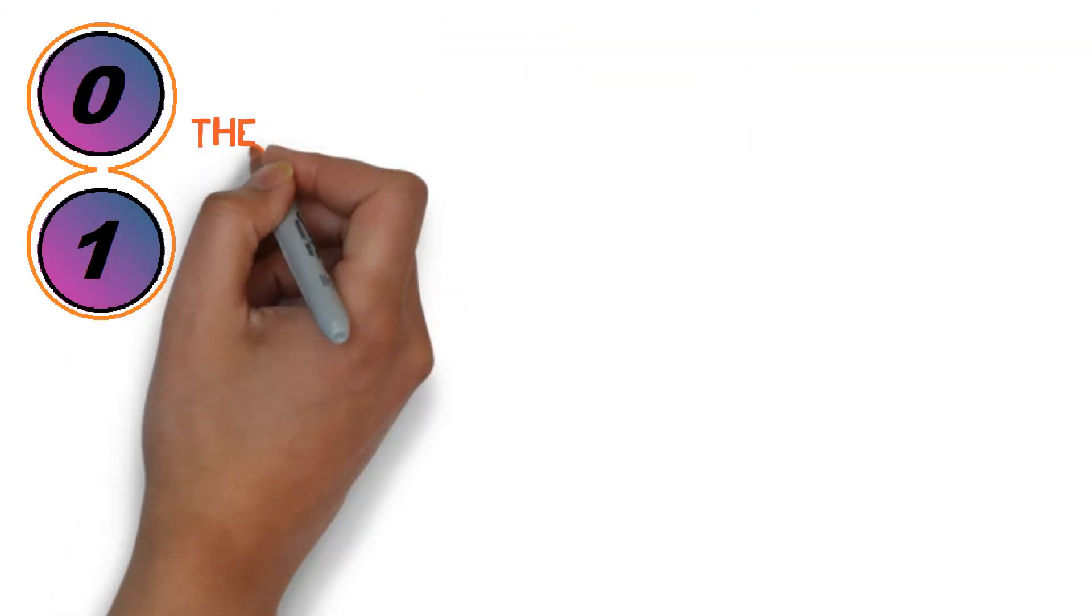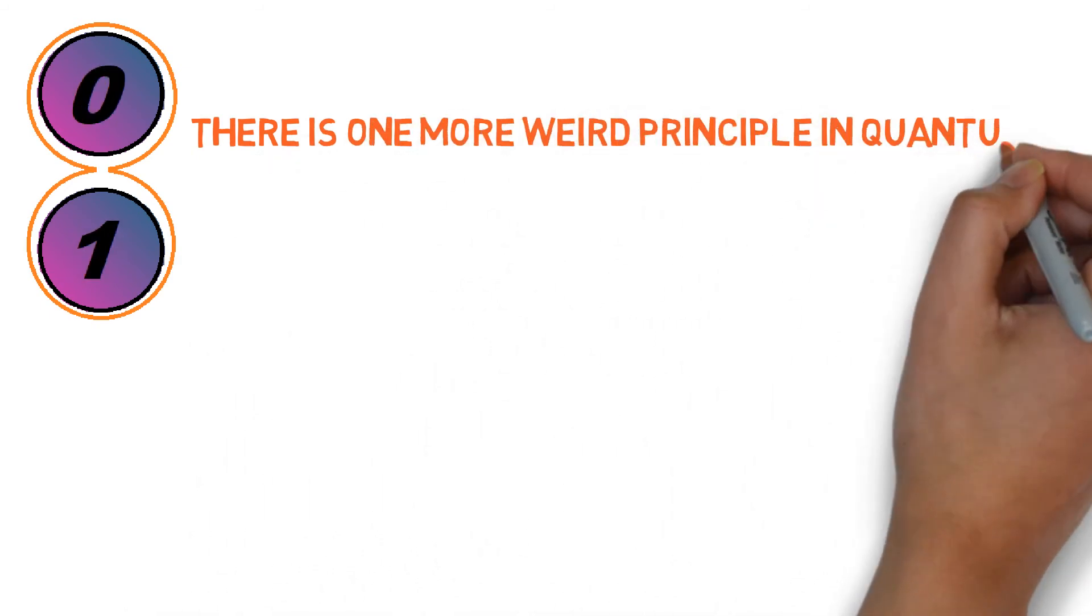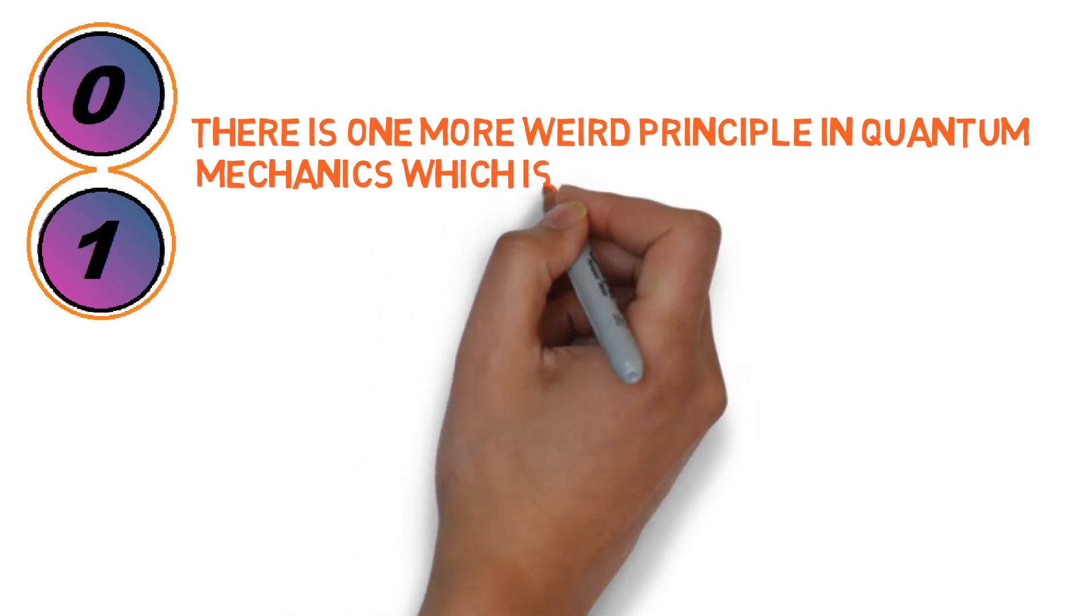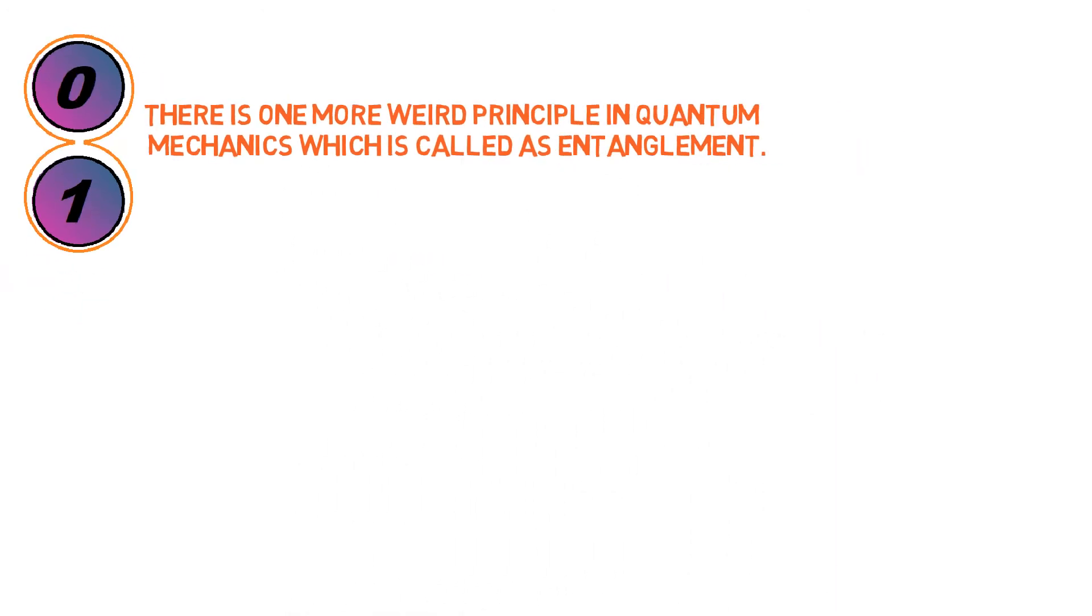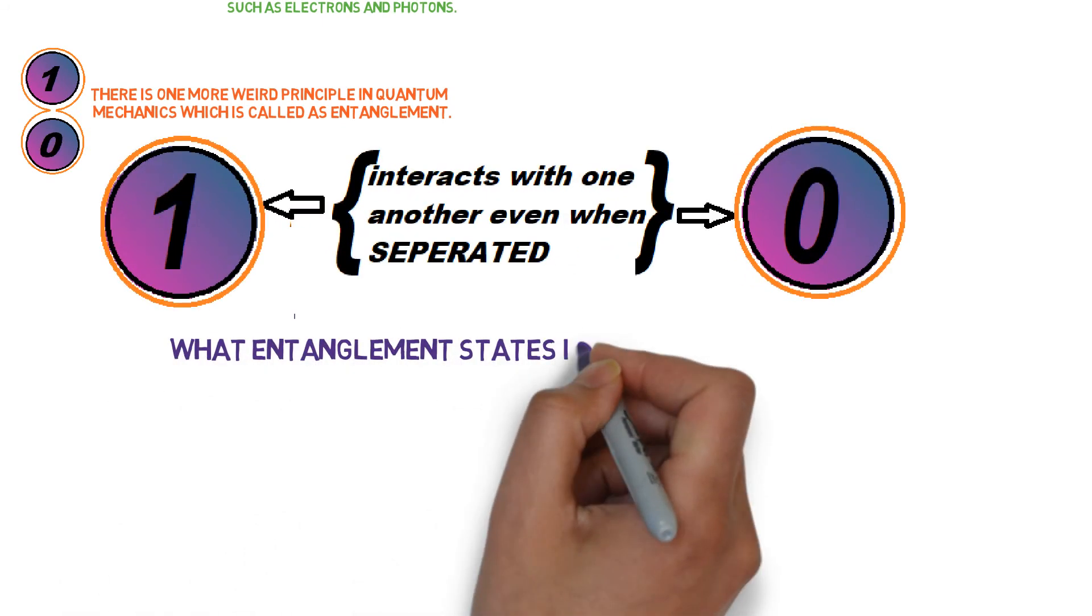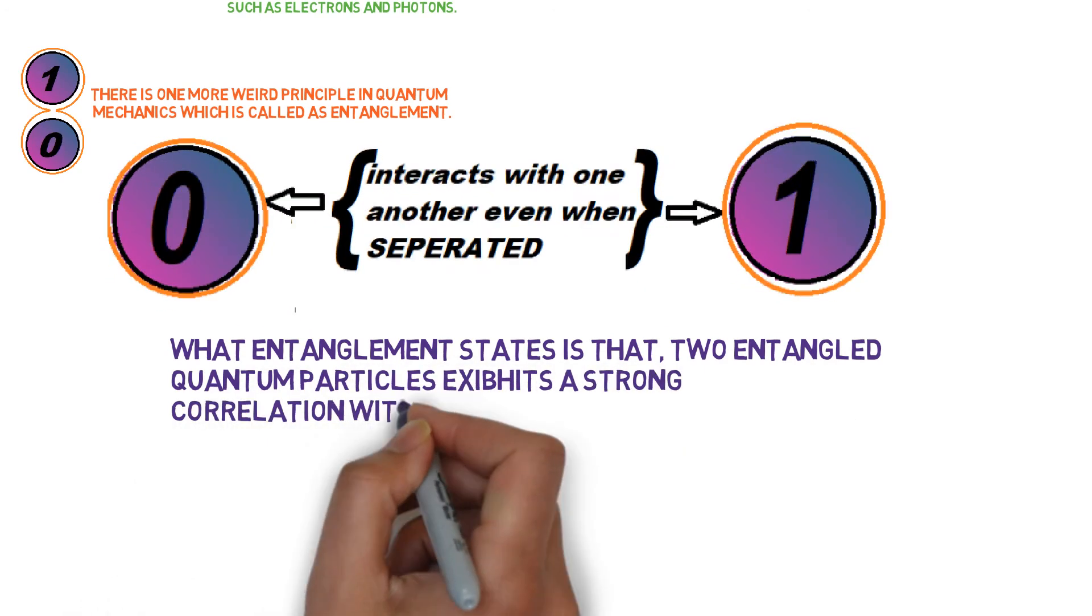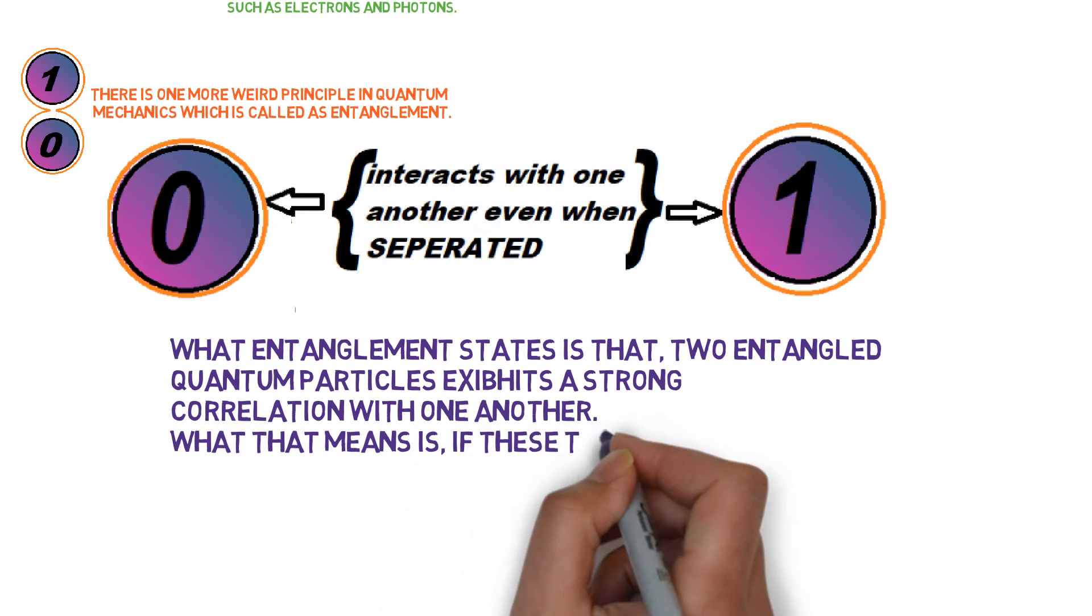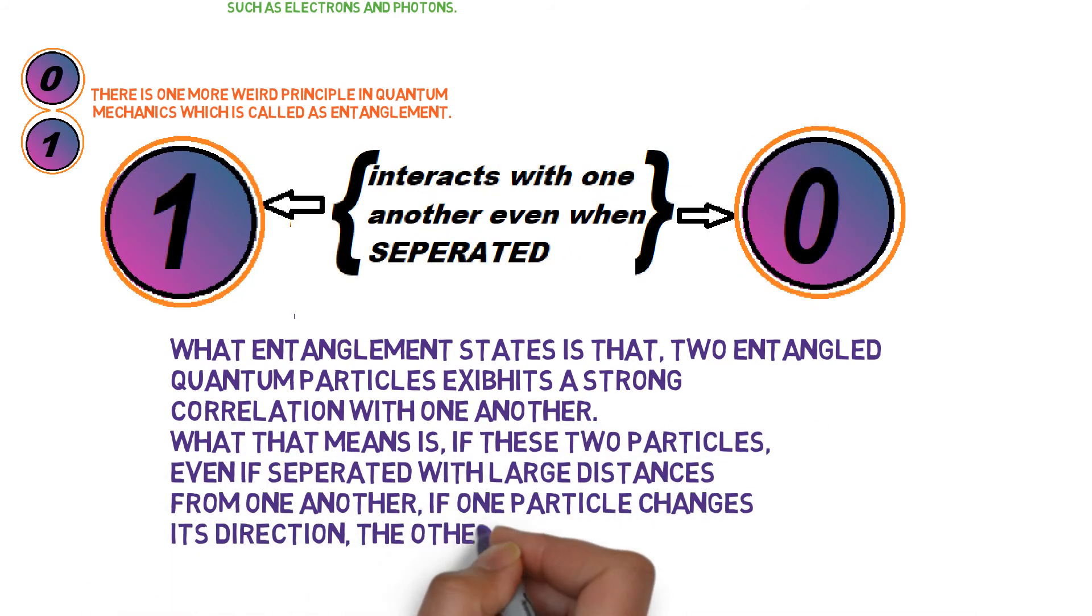There is one more weird principle in quantum mechanics which is called entanglement. What entanglement states is that two entangled quantum particles exhibit a strong correlation with one another. So what that means is if these two particles, even if separated with larger distances from one another, if one particle changes its direction, the other particle also changes instantly.